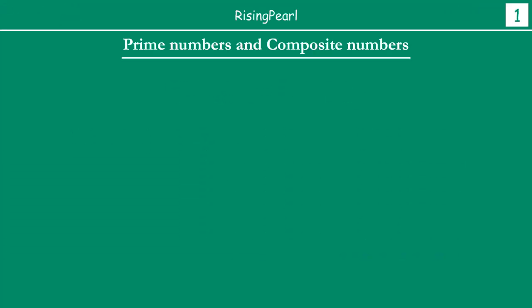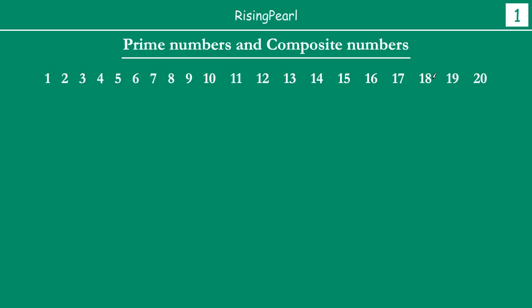We begin the conversation by talking about what are prime numbers and composite numbers. This concept is not new for any one of you. Here I have written numbers 1 through 20 — a very small set of natural numbers — but this is really applicable to all natural numbers all the way till infinity. Now let's take a look at each of these numbers. We will ignore 1 for now because 1 is a special number.